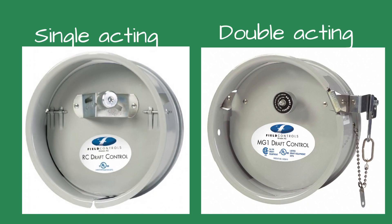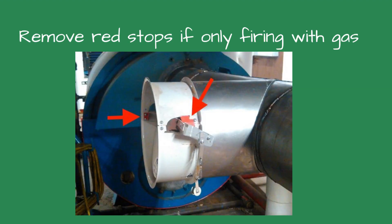Each fuel or combination of fuels requires a specific type of barometric damper. Single-acting is traditionally used for oil-fired burners, while double-acting is used for gas or dual-fuel burners. The red stops found in double-acting dampers should be removed if only firing with natural gas.